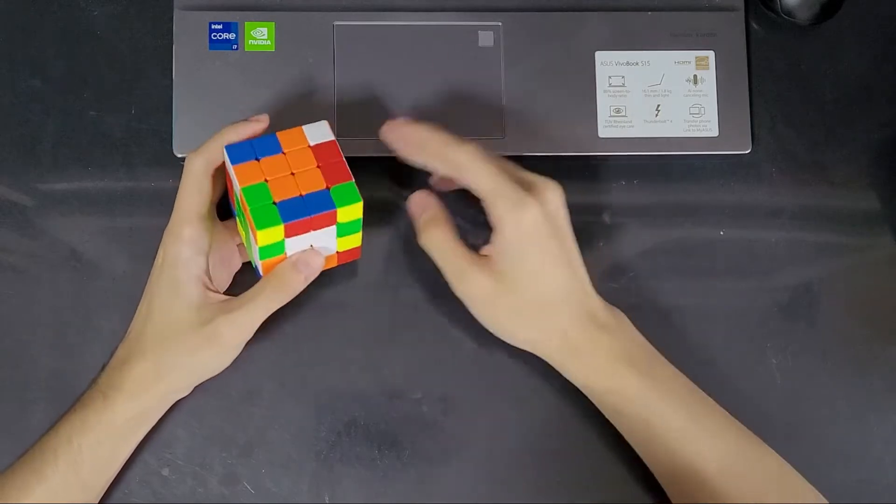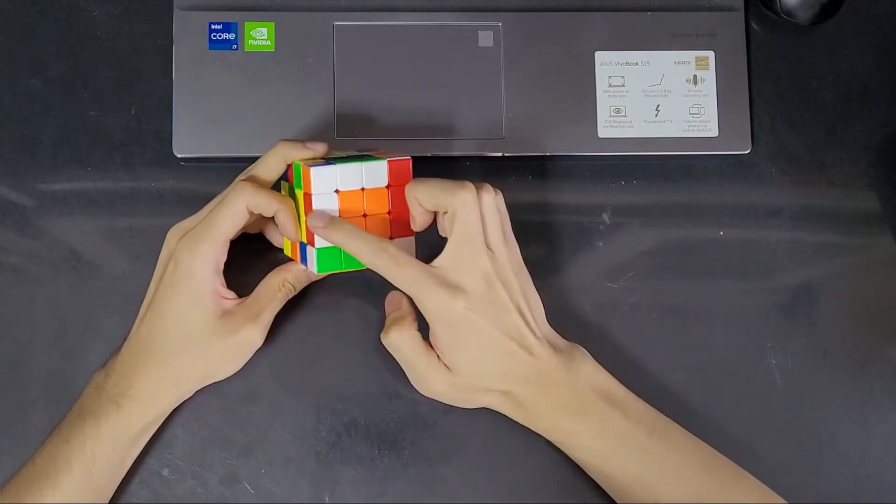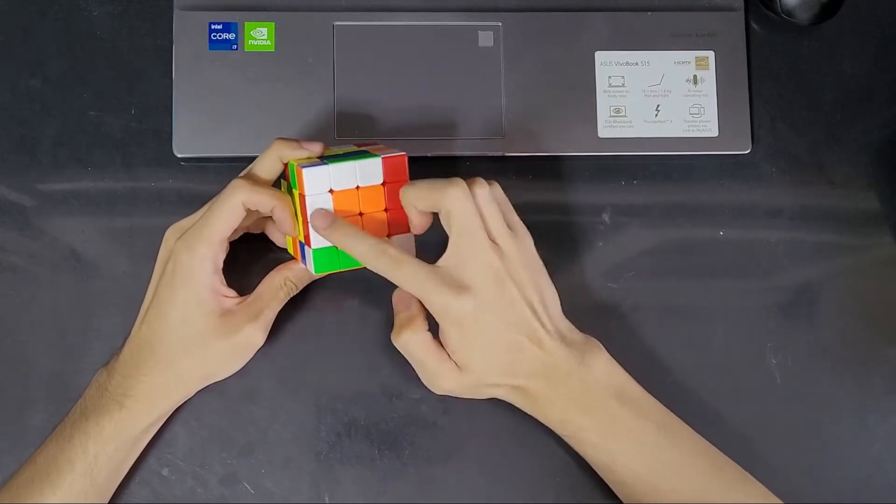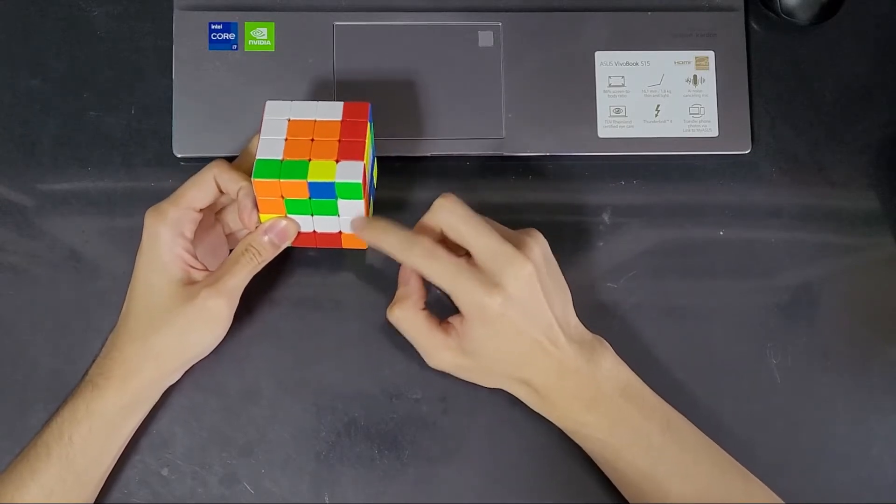So with that, you can just continue to pair edges. Proceed to pair more and more edges. You will notice that you will start running out of scrambled edges in the top layer to replace your new solved edge with.